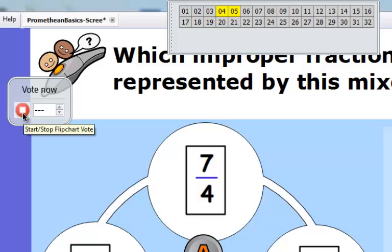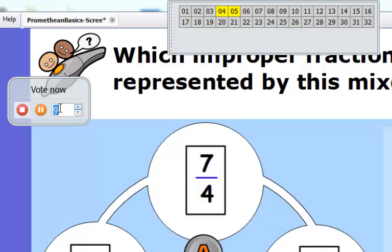You can also give the students a set number of time, which is on this box right here. So I can give the students, say, 10 more seconds, and when that is done counting down, it's going to automatically stop the vote, which is the same as pressing the stop button.